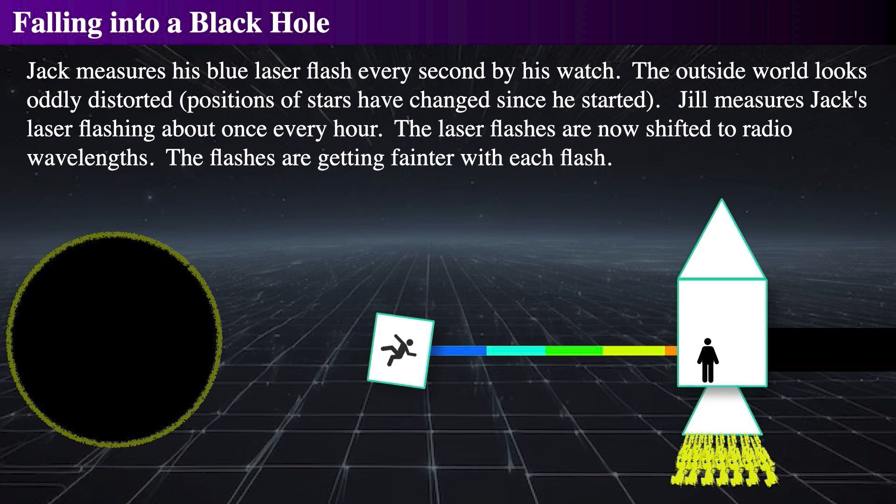As Jack gets closer to the hole, the laser flashes are redshifted so dramatically that Jill must adjust her receiver to an AM radio frequency just to perceive them. She no longer sees the flashes directly, perceiving them only as faint radio signals waning ever weaker. If Jack had started with a dim laser, Jill wouldn't have been able to see it at all.